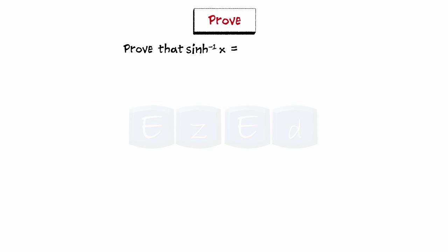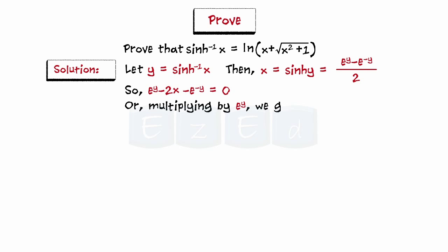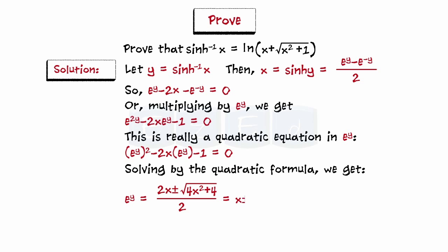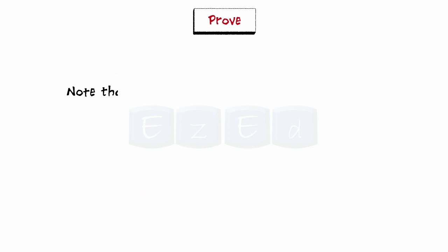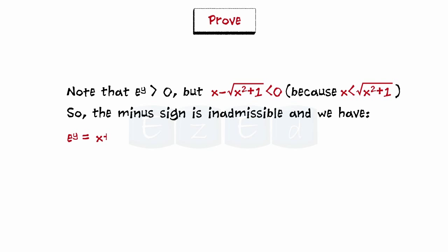Suppose we want to prove the logarithm relation for sinh⁻¹x. We start with y = sinh⁻¹x, so x = sinh y = (e^y − e^(−y)) / 2. This gives e^y − 2x − e^(−y) = 0, or multiplying by e^y: e^(2y) − 2x·e^y − 1 = 0. This is a quadratic in e^y; solving by the quadratic formula gives e^y = x ± √(x² + 1). Since e^y > 0 and x − √(x² + 1) < 0, the minus sign is inadmissible, so e^y = x + √(x² + 1), giving sinh⁻¹x = ln(x + √(x² + 1)).